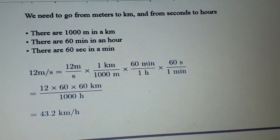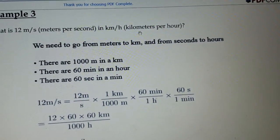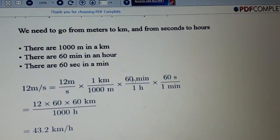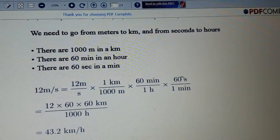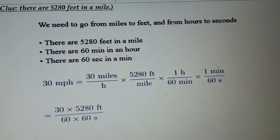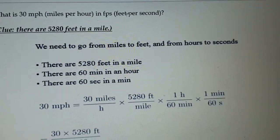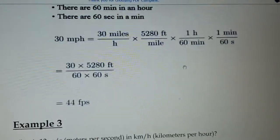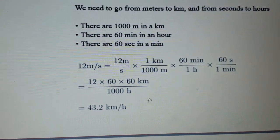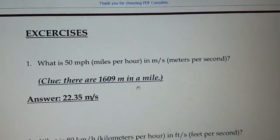Now we convert per second into per hour, which is the opposite direction. So we multiply by 60 minutes and then by 60 seconds, because per second to per hour requires multiplication here. In the previous example we went from hours to seconds and divided. Solving this gives us 43.2 kilometer per hour.